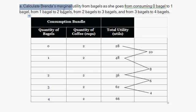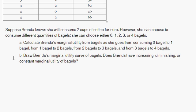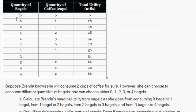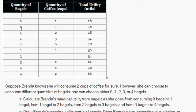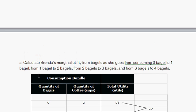So that's what I've done. We're fixing the number of coffees — we know she's going to stick with two coffees. So I'm going through here and removing any bundles that don't have two coffees. And now we're going to find the marginal utility going from zero to one bagels, from one to two bagels, from two to three bagels, and from three to four bagels.